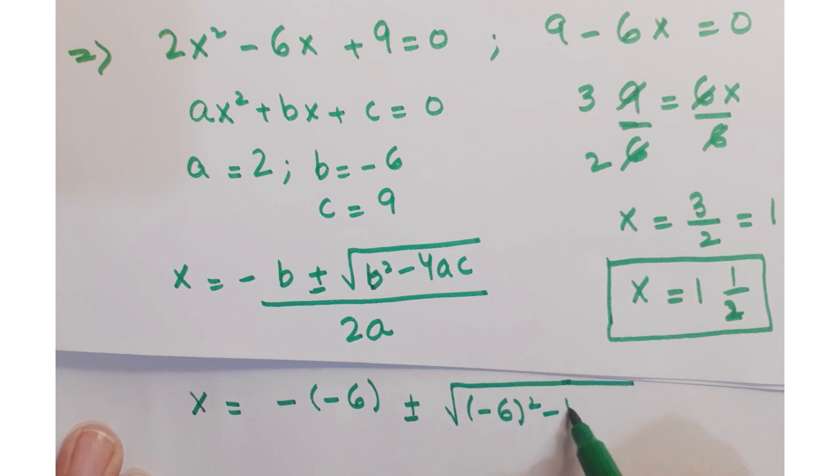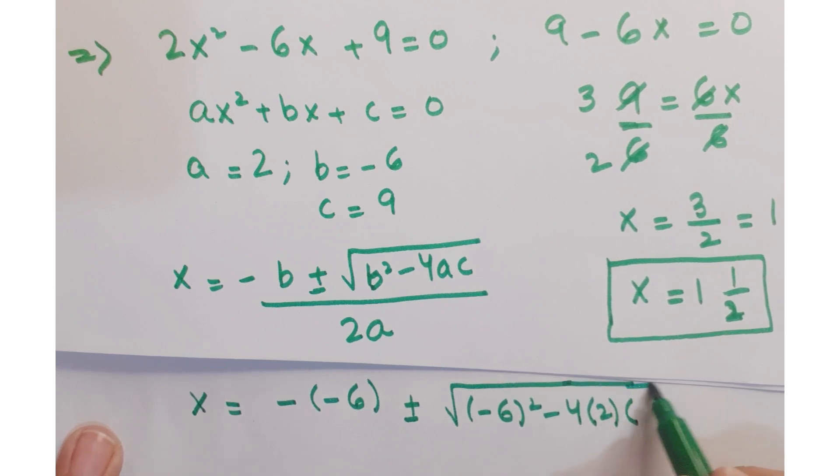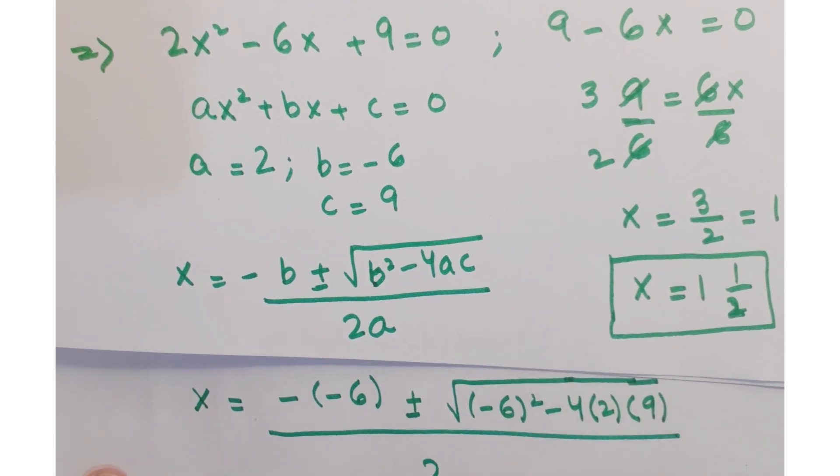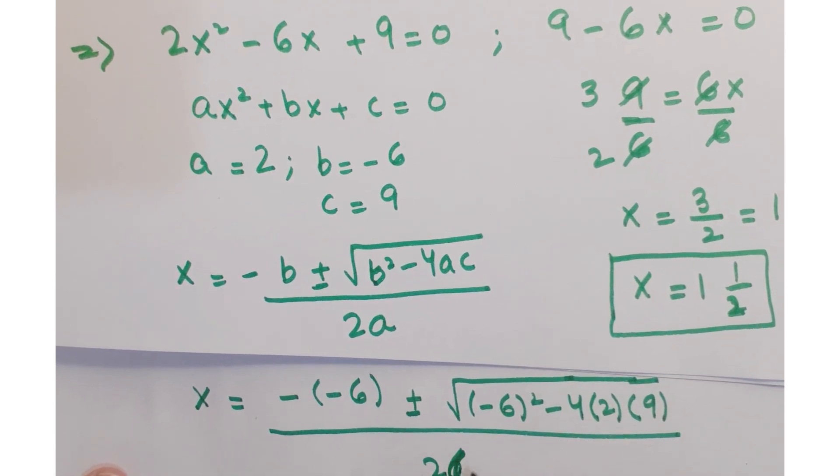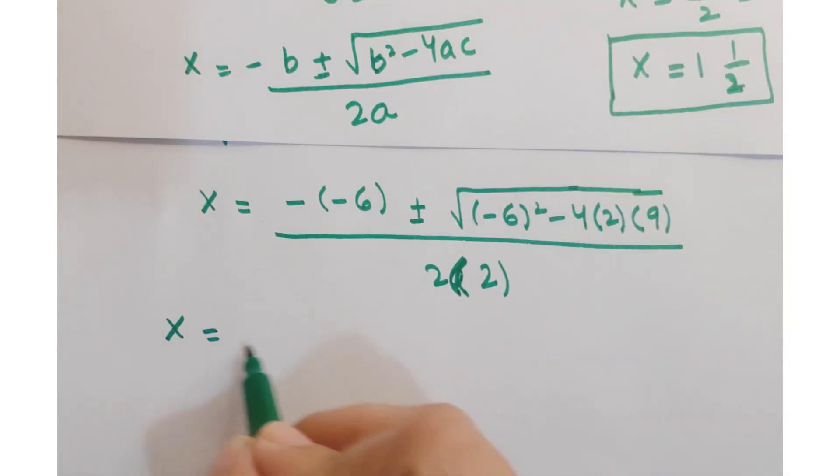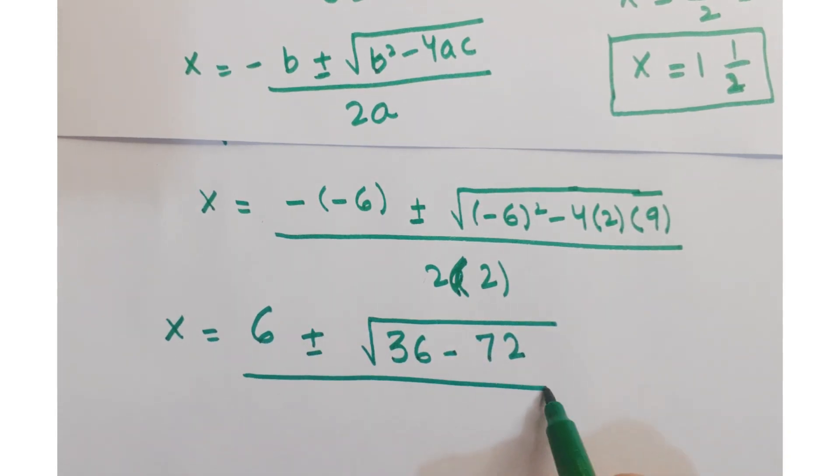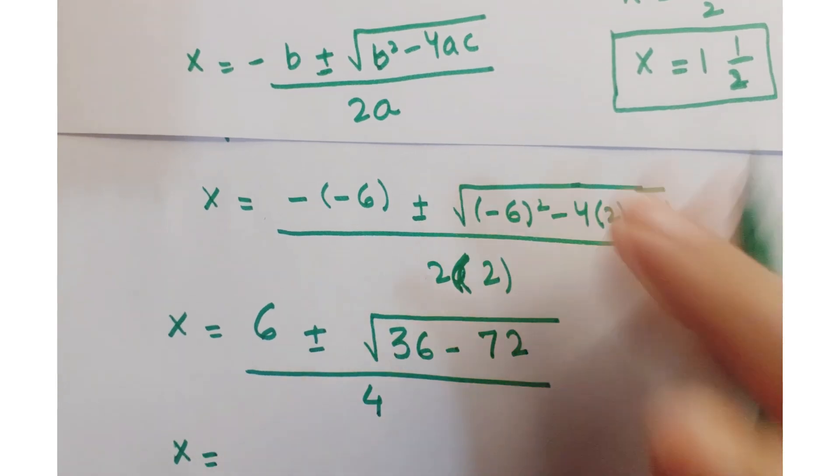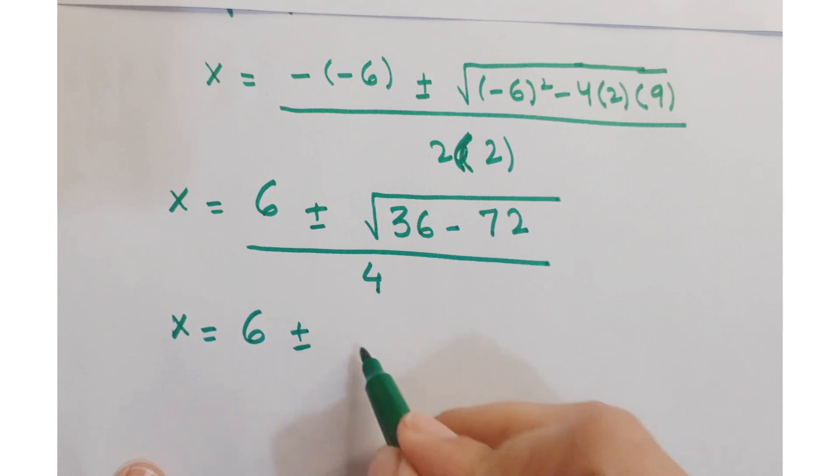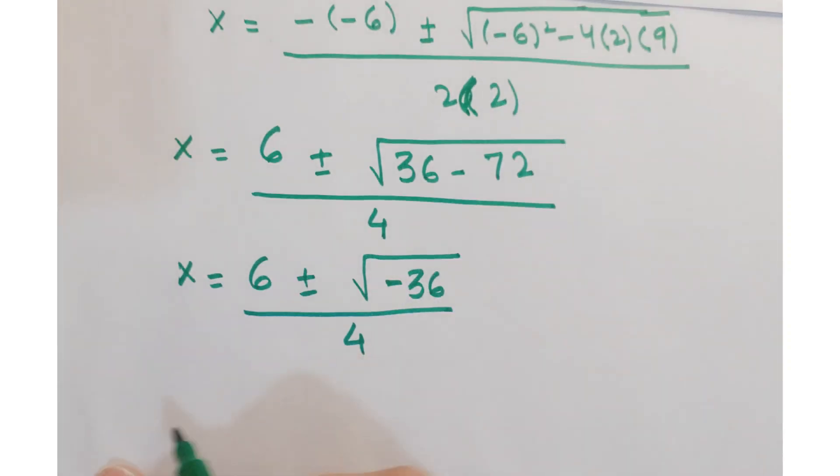So we get x is equal to minus minus 6 plus minus under root minus 6 square minus 4 into 2 into 9 upon 2 into 2. After simplification you get 6 plus minus under root 36 minus 72 upon 4, or you can write it as 6 plus minus under root 36 into under root minus 1 upon 4.